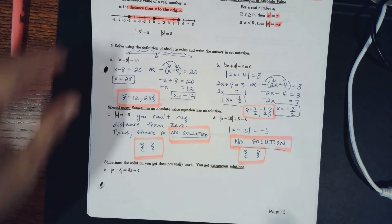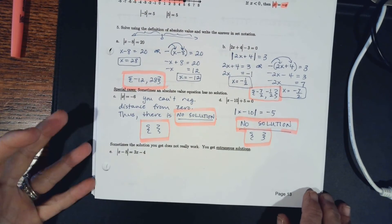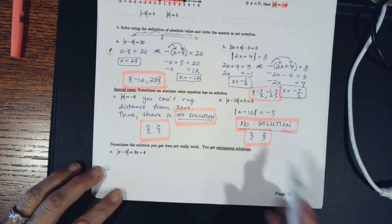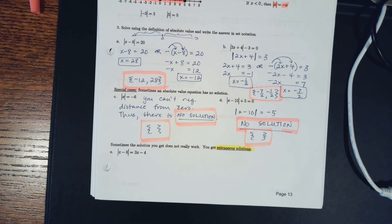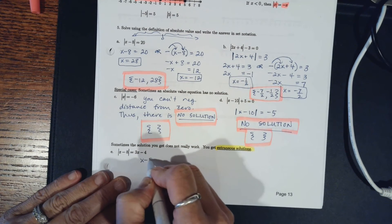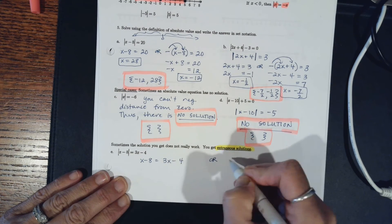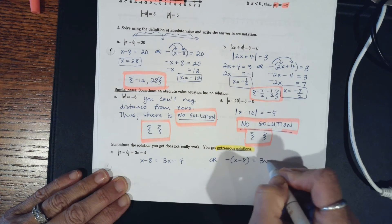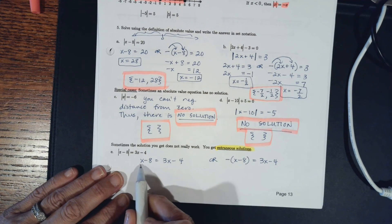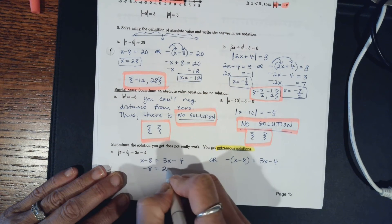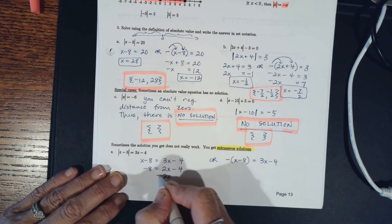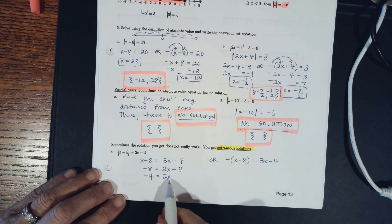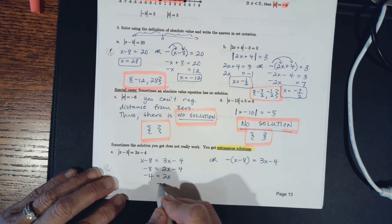And then last special case we have something that just doesn't work, but if you get two solutions one of them works and that's called extraneous. Extraneous means you get two answers but they're not solutions because a solution makes it true. An answer doesn't necessarily make the original one true. So we'll solve this: x minus 8 equals 3x minus 4, or the opposite of x minus 8 equals 3x minus 4. I'm going to take away an x from both sides.